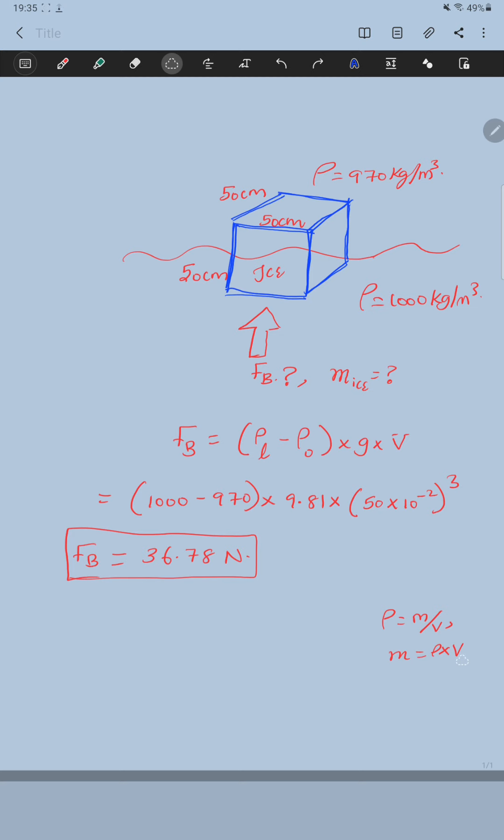So I'm just substituting everything that we know. Mass of ice equals the density times the volume. If I substitute the values I get 970 times 50 centimeters times 50 centimeters times 50 centimeters, which is 50 centimeter cubed. And if I put it all in I get the mass of the ice to be 121.25 kilograms. This is the mass of the ice that I get.